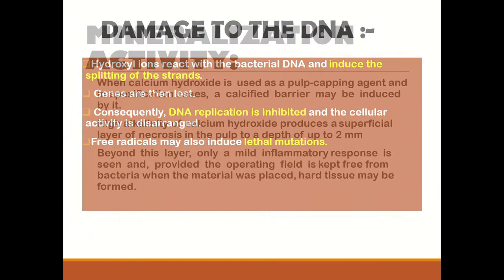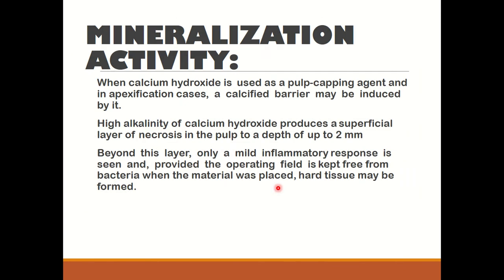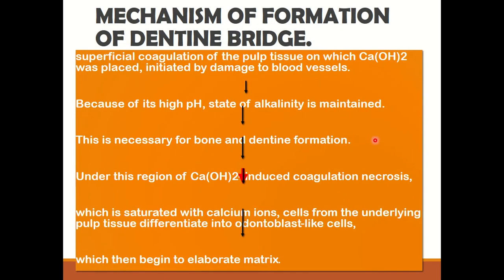Next is mineralization activity. When calcium hydroxide is placed against the pulp, the high alkalinity of the material causes irritation and produces a zone of coagulation necrosis, which has been suggested to be vital to tertiary dentine formation. Various authors say that when calcium hydroxide is used as a pulp-capping agent in apexification cases, a calcific barrier may be induced. The high alkalinity produces a superficial layer of necrosis in the pulp to a depth of about 2 mm, and beyond this layer only a mild inflammatory response is seen — provided the operative area is kept free from bacteria, hard tissue may be formed.